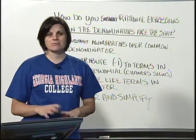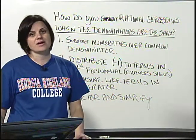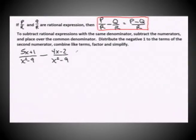Let's take a look at some of the theory behind it and an example to help us understand it. If you have P over R and Q over R, where they are rational expressions, then P over R minus Q over R is simply P minus Q, those two polynomials being subtracted, over that common denominator of R, which is also, in this case, a polynomial.